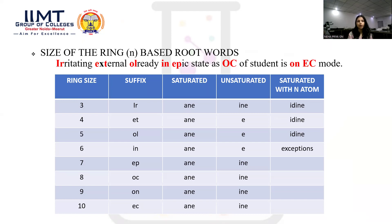The size of the ring can be learned using a mnemonic sentence: 'Irritating external already in epic state, as OC of student is on EC mode.' The highlighted portions give the suffix for each ring size: ring size 3 — 'ir'; ring size 4 — 'et'; ring size 5 — 'ol'; ring size 6 — 'in'; ring size 7 — 'ep'; ring size 8 — 'oc'; ring size 9 — 'on'; ring size 10 — 'ec.'